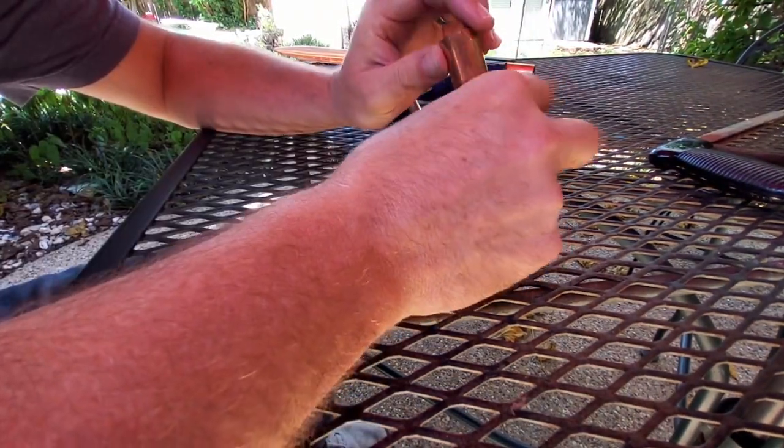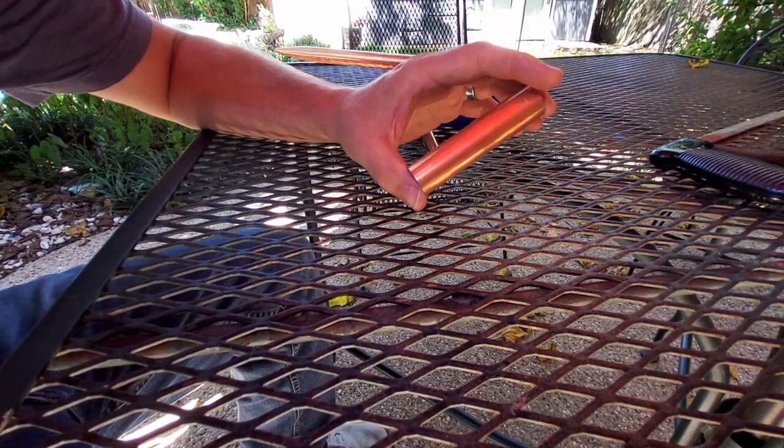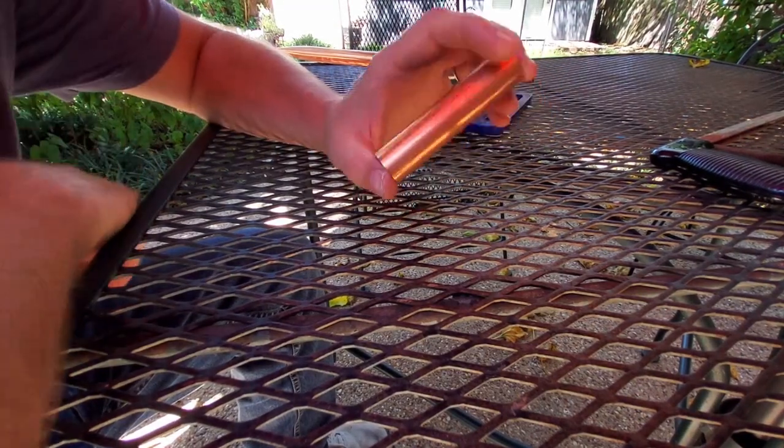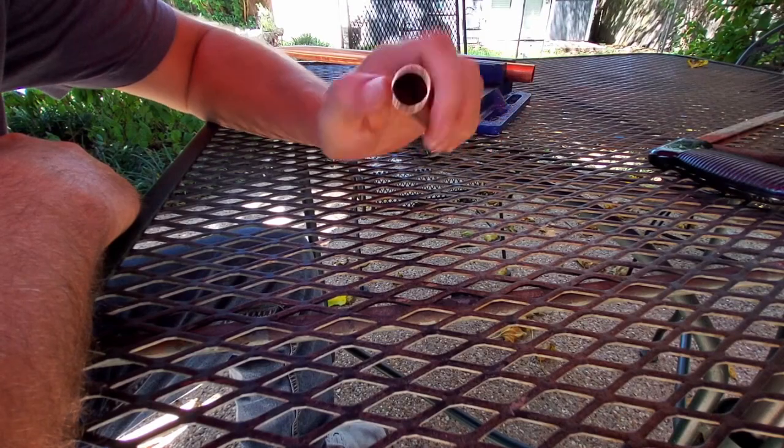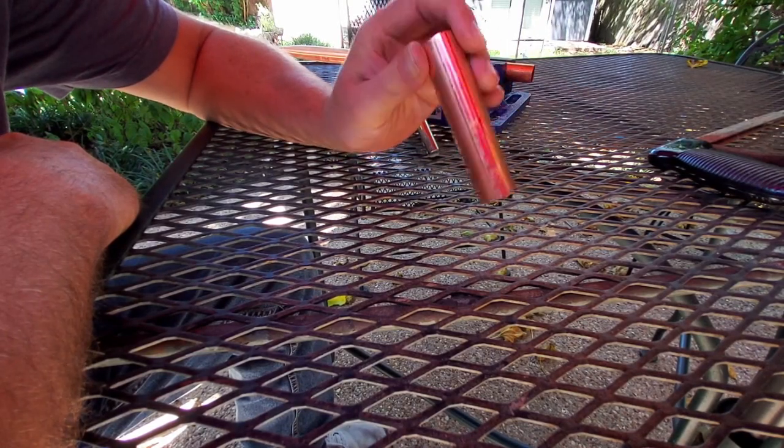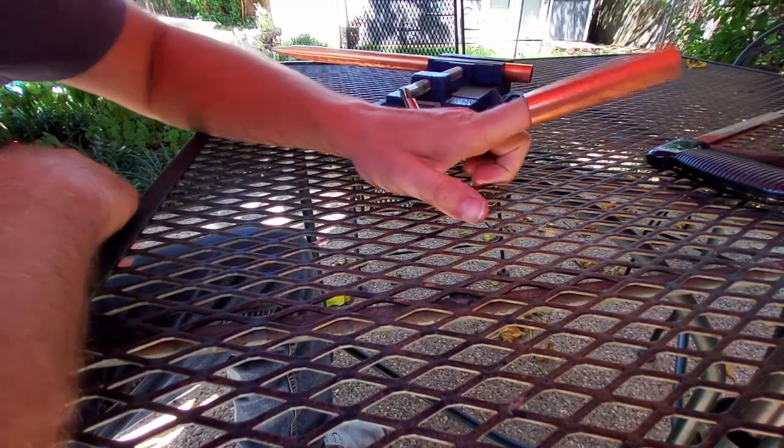Hey guys, so I had a viewer ask a question after I posted the video about making your own bus bars out of aluminum. He brought up something which is a pretty good idea and I think I've heard this before, but taking copper pipe and smashing it down to make bus bars.